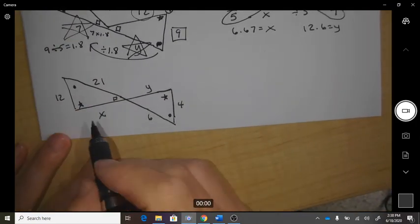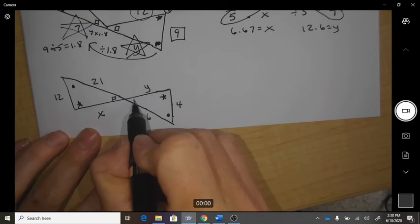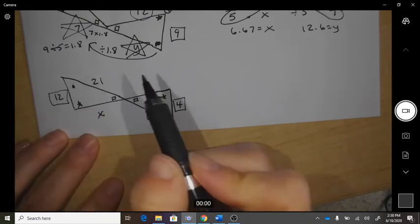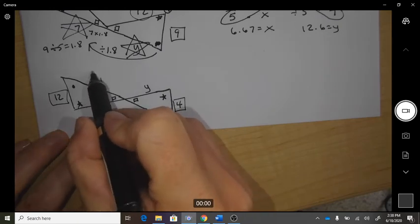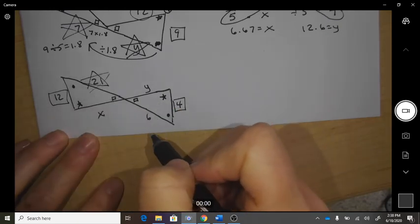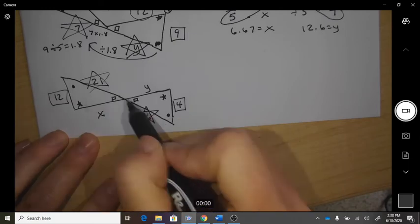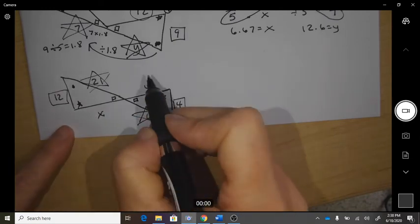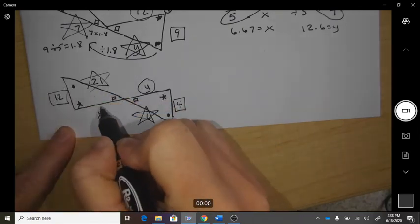Next one. So across from the square is 4 and 12, across from the star is 21 and 6. See how that kind of tricks you? They're in different locations. And across from the circle is y.